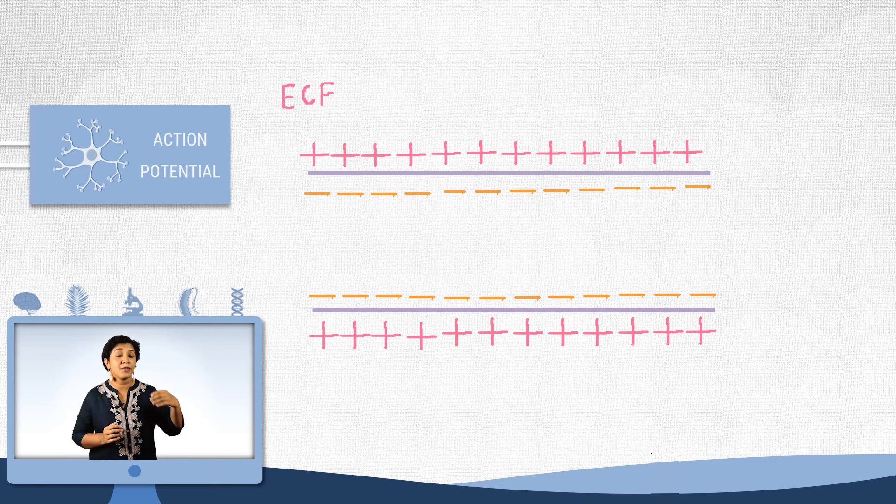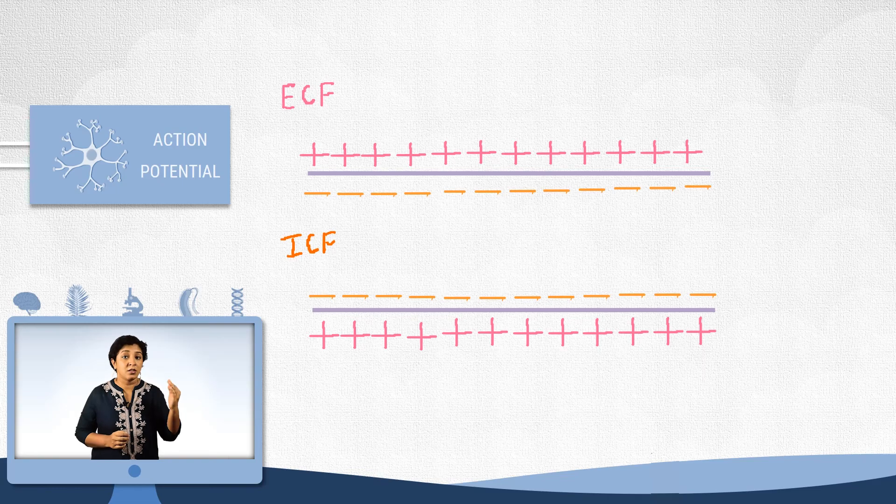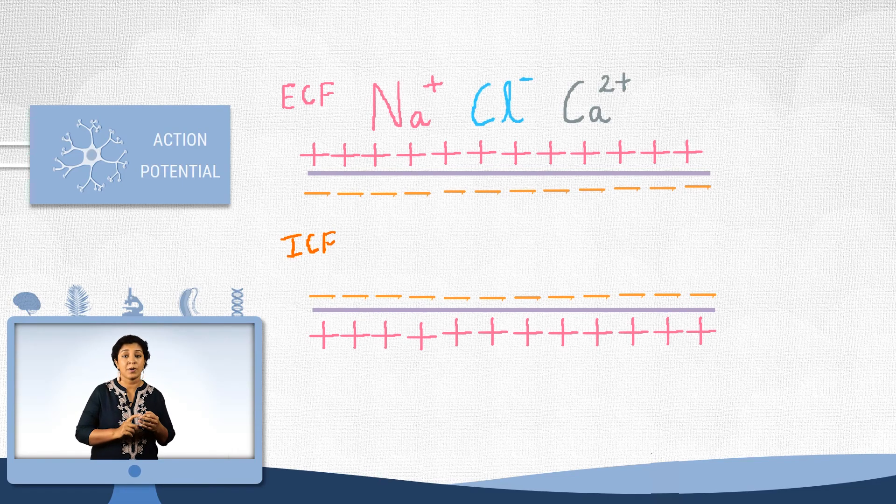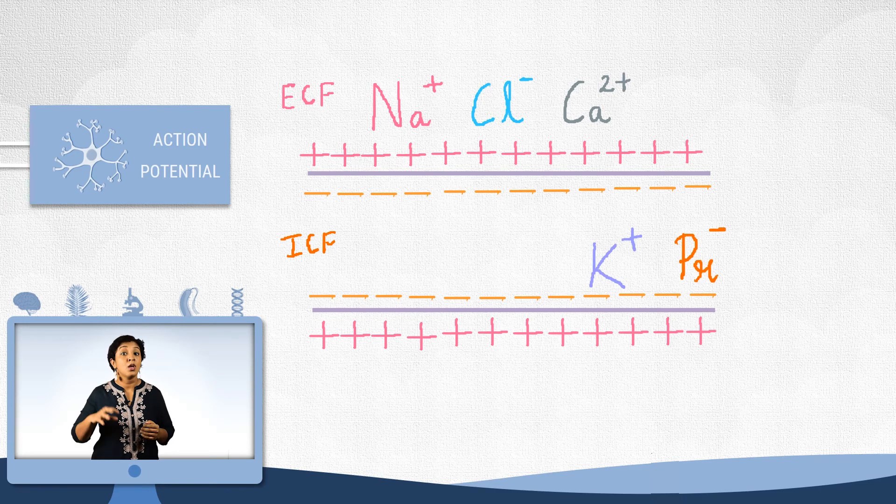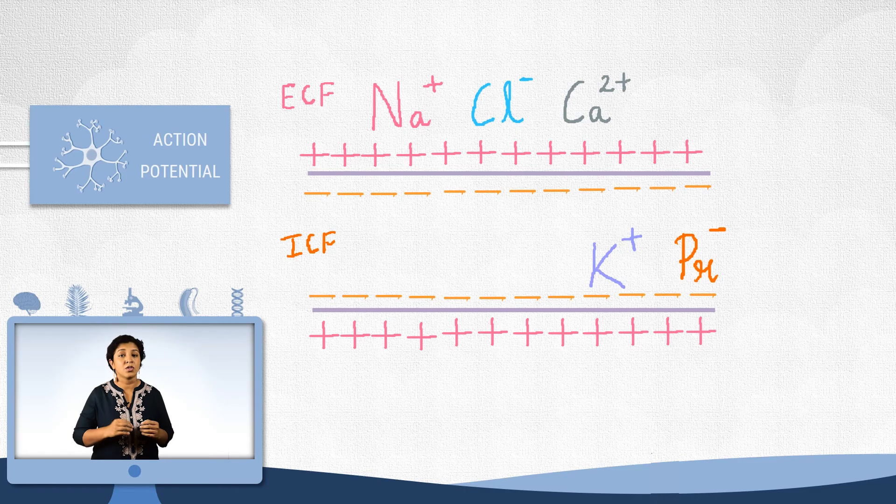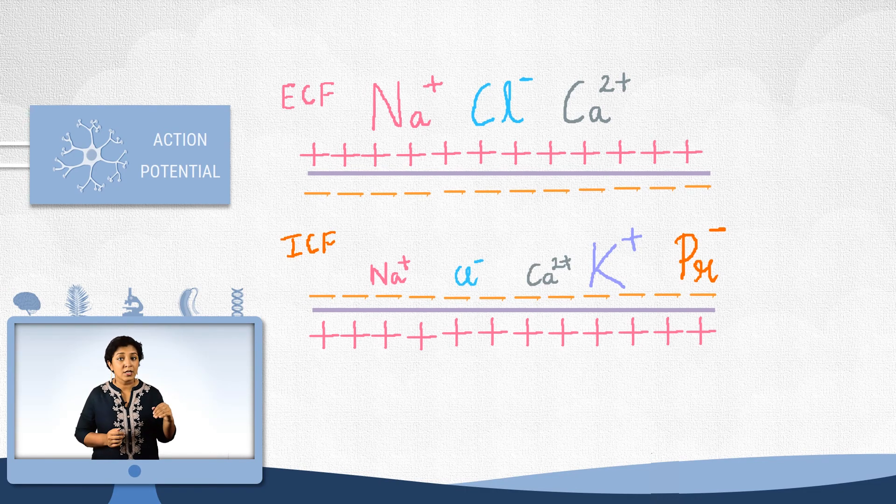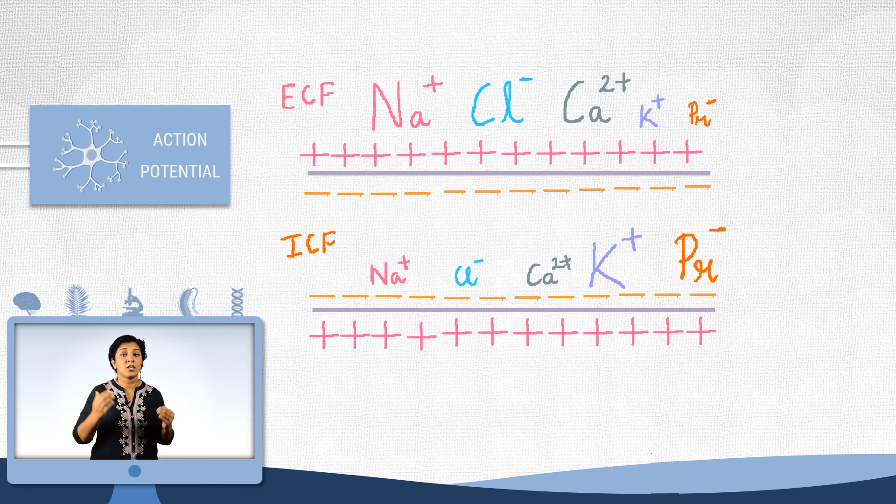This is because of the constituents of the extracellular fluid and the intracellular fluid. The extracellular fluid or the ECF is rich in sodium, chloride and calcium ions. Whereas the intracellular fluid is rich in potassium and many proteins. The proteins carry a lot of negative charges. Note that there are sodium, chloride and calcium ions inside too and potassium and proteins outside. But they are in much lesser concentration.